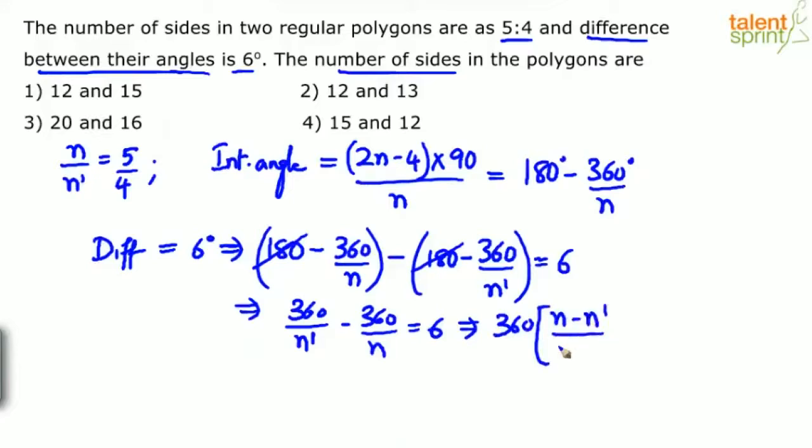We get 360(n - n')/(n×n') = 6. Since n/n' = 5/4, we can conclude n = 5x and n' = 4x. Substitute 5x and 4x in place of n and n' to find the value of x.